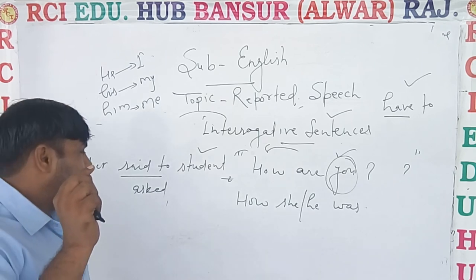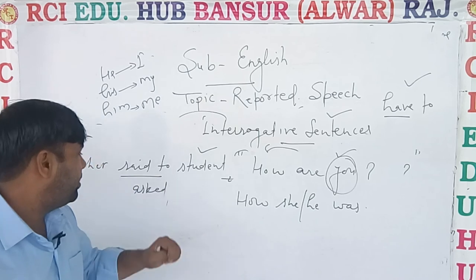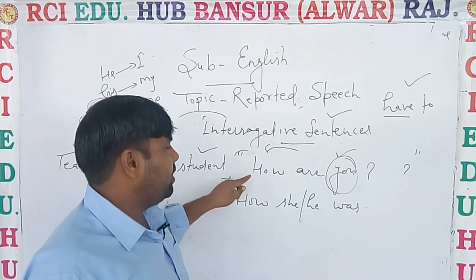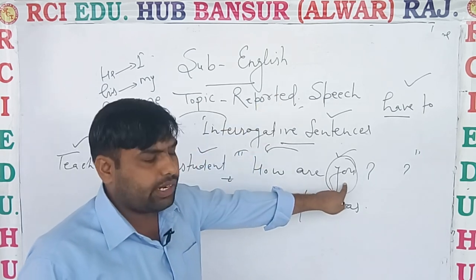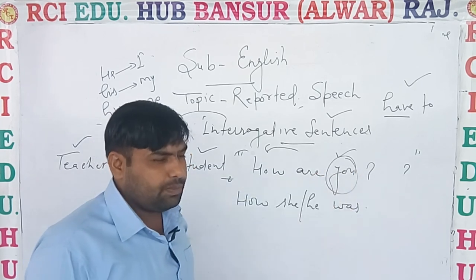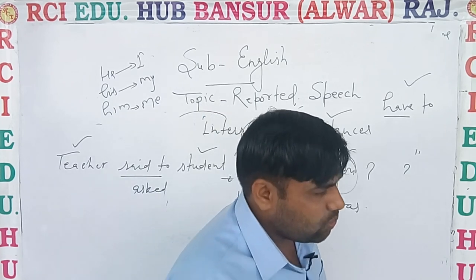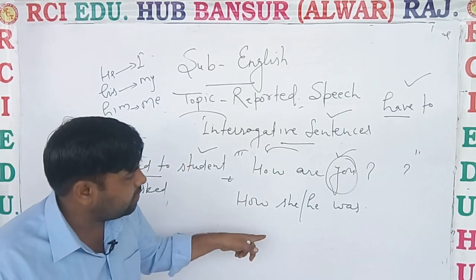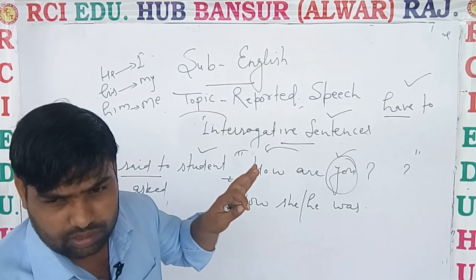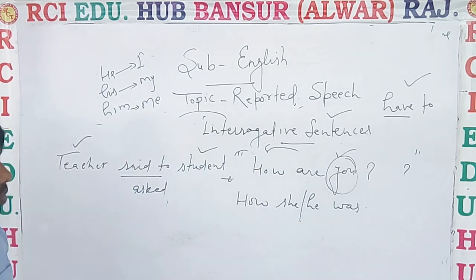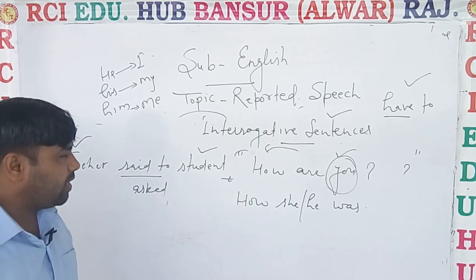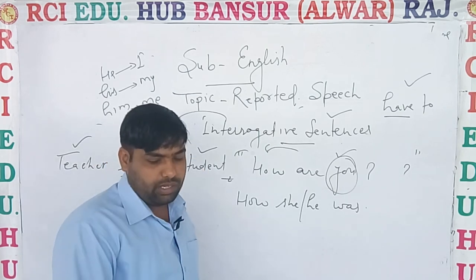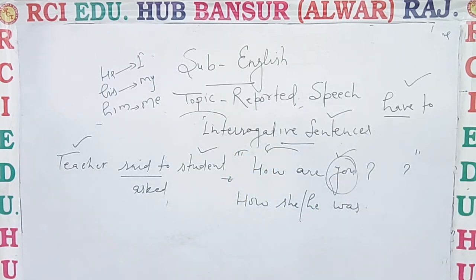So students, the important thing is that if an interrogative sentence is there, then firstly we will use the subject and after that the helping verb, because it is necessary to make it a simple sentence. When an interrogative sentence is given and we change it into indirect, we have to make it simple — then it will be correct. Okay, these are interrogative sentences. In the next class we will discuss imperative sentences. Thank you, have a nice day.